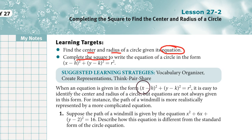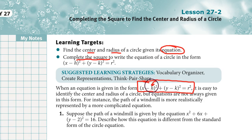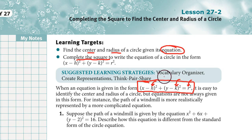In the last lesson, we looked at the standard equation of a circle, where one number gives the x-coordinate of the center, another gives the y-coordinate of the center, and the last number gives the radius. With those three numbers, we could graph a circle. But what do you do if the equation of a circle is not in this form to begin with? Is there a way to change it into this format?